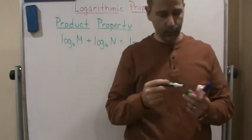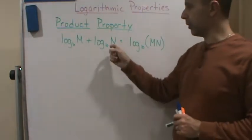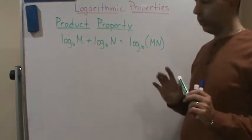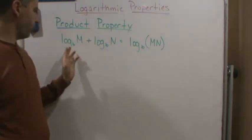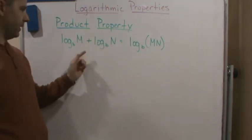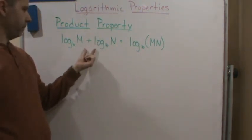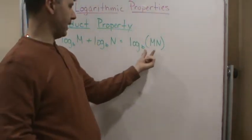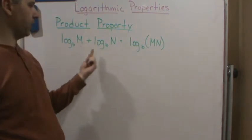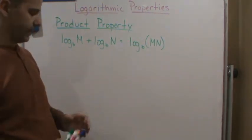Okay, so welcome back. Today we're going to discuss the product property for logs. So how does this work? Well, what it's saying is if we have two logs with the same base and we're adding them, then we can write this as one single log with the same base as the product of the two separate arguments. That's what it's saying.